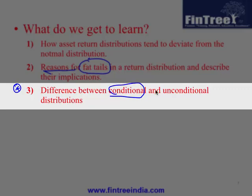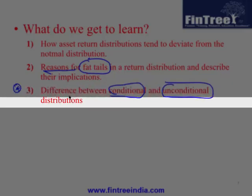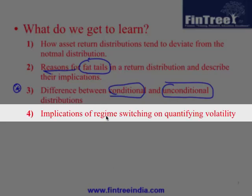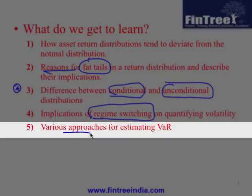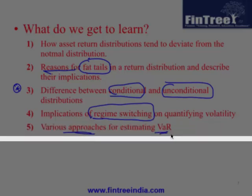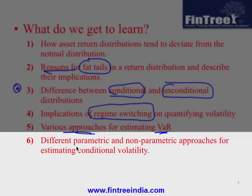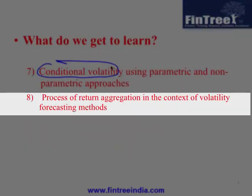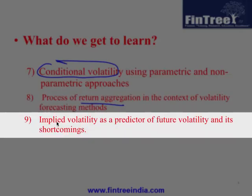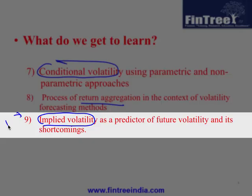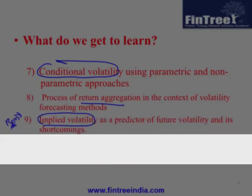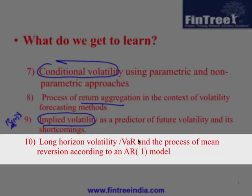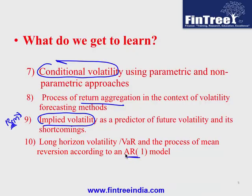We will also discuss the reasons for having a fat tail in return distributions. Then there is a particularly important learning outcome around conditional and unconditional distributions, where you can expect some theory questions. Then the concept of regime switching — a fancy term but a simple concept — followed by different approaches of estimating VAR, both parametric and non-parametric approaches, conditional volatility, return aggregations, implied volatility from the Black-Scholes model, long horizon volatility, mean reversion, and the AR(1) model.